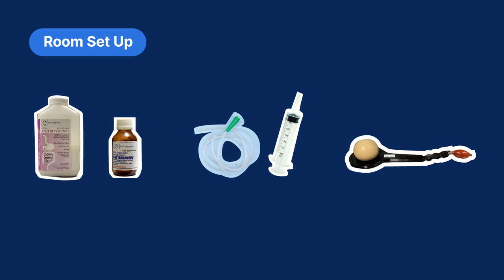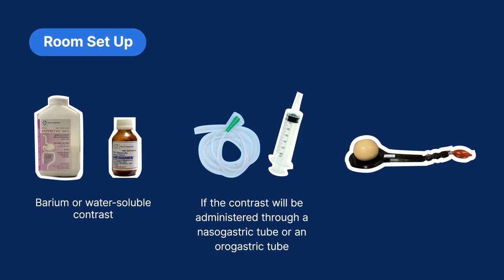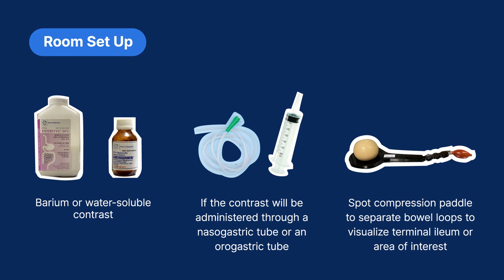For room setup, supplies needed for this procedure include the contrast, either barium or water-soluble contrast. If contrast will be administered through a nasogastric or orogastric tube, additional supplies may be needed, such as a 60-milliliter syringe to draw up the contrast and a Christmas tree adapter, which fits flush into the port of the nasogastric or orogastric tube. A spot compression paddle will also be needed for the radiologist or RRA to press on the small bowel to separate bowel loops and visualize the terminal ileum or area of interest.